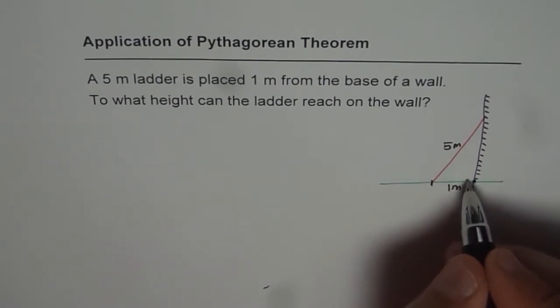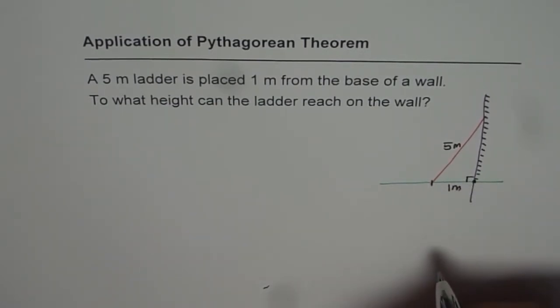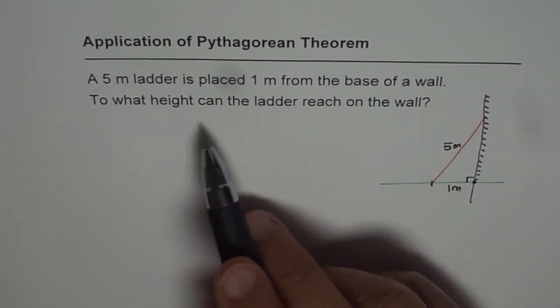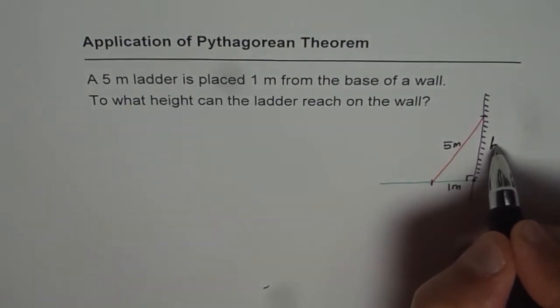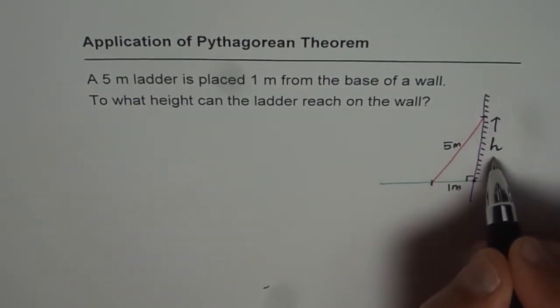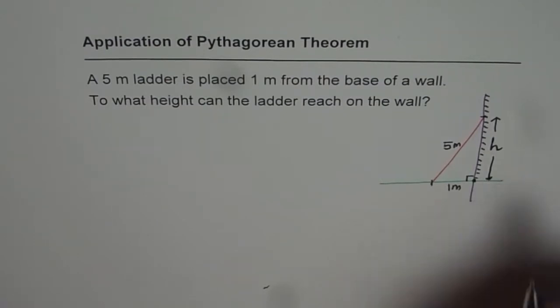Now of course, the walls are at right angle, and therefore we can apply Pythagorean theorem. We need to find the height that ladder reach on the wall. So that is the maximum height. Let's call this as H. So that is the height we need to find.